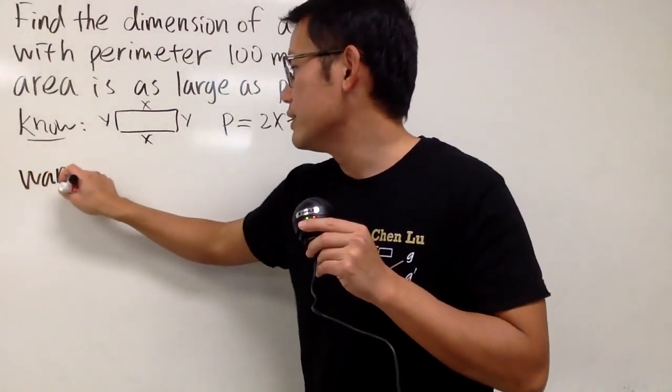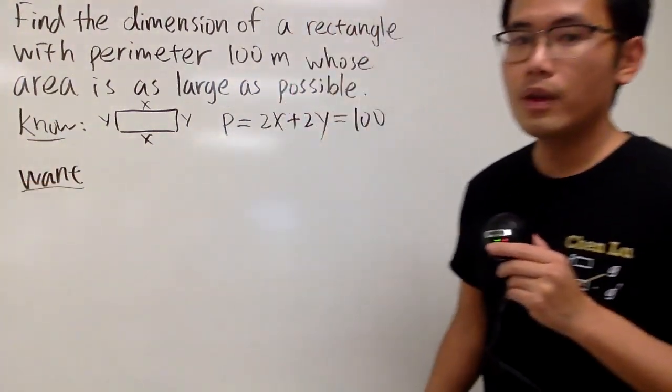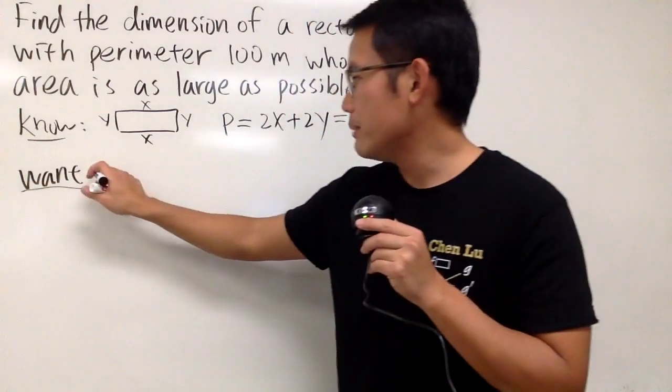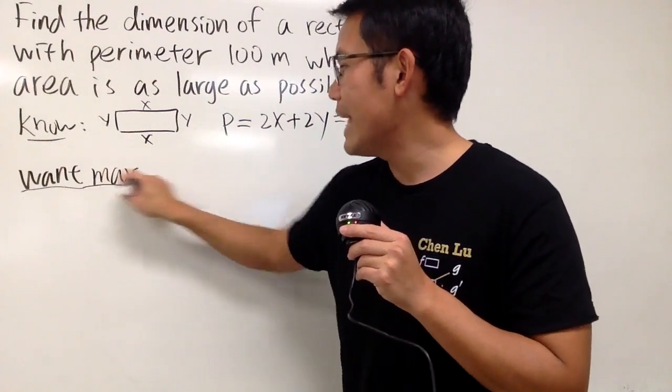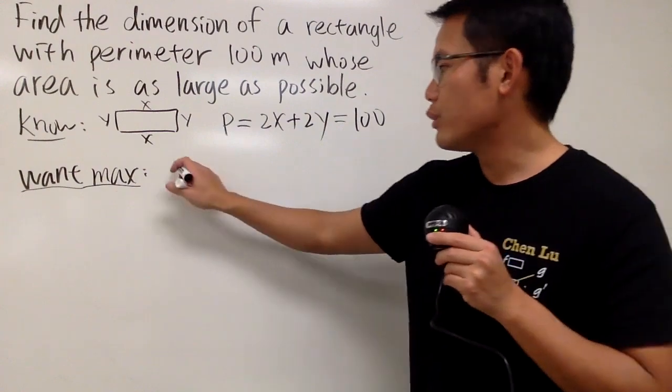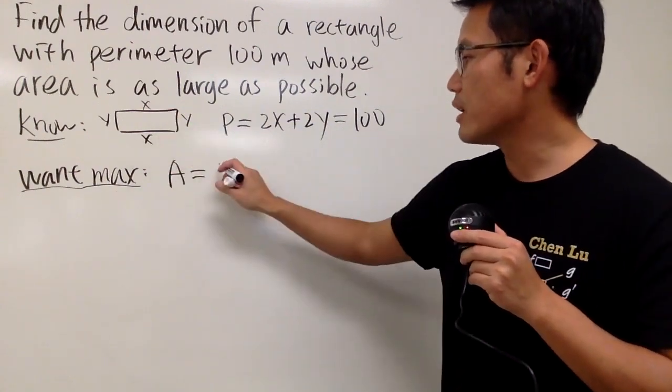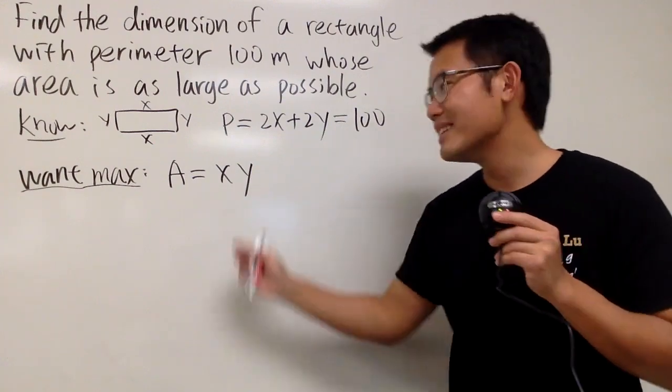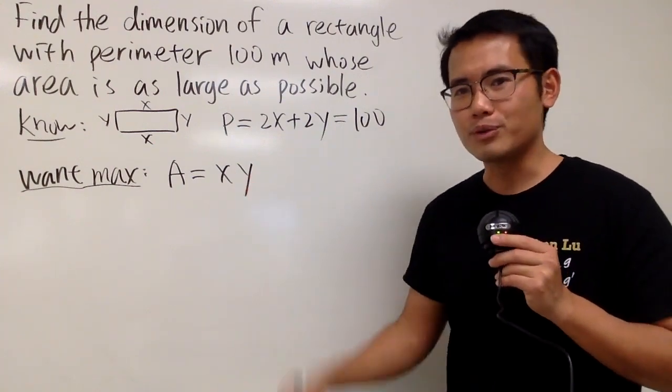And now, this is what we want to know. We are trying to get the largest possible area, right? So we want the maximum of the area. And of course, if you look at the area of the rectangle, the area is just going to be this right here, x times y. That's it. But as we can see, we have two unknowns here, two variables right here. No good.